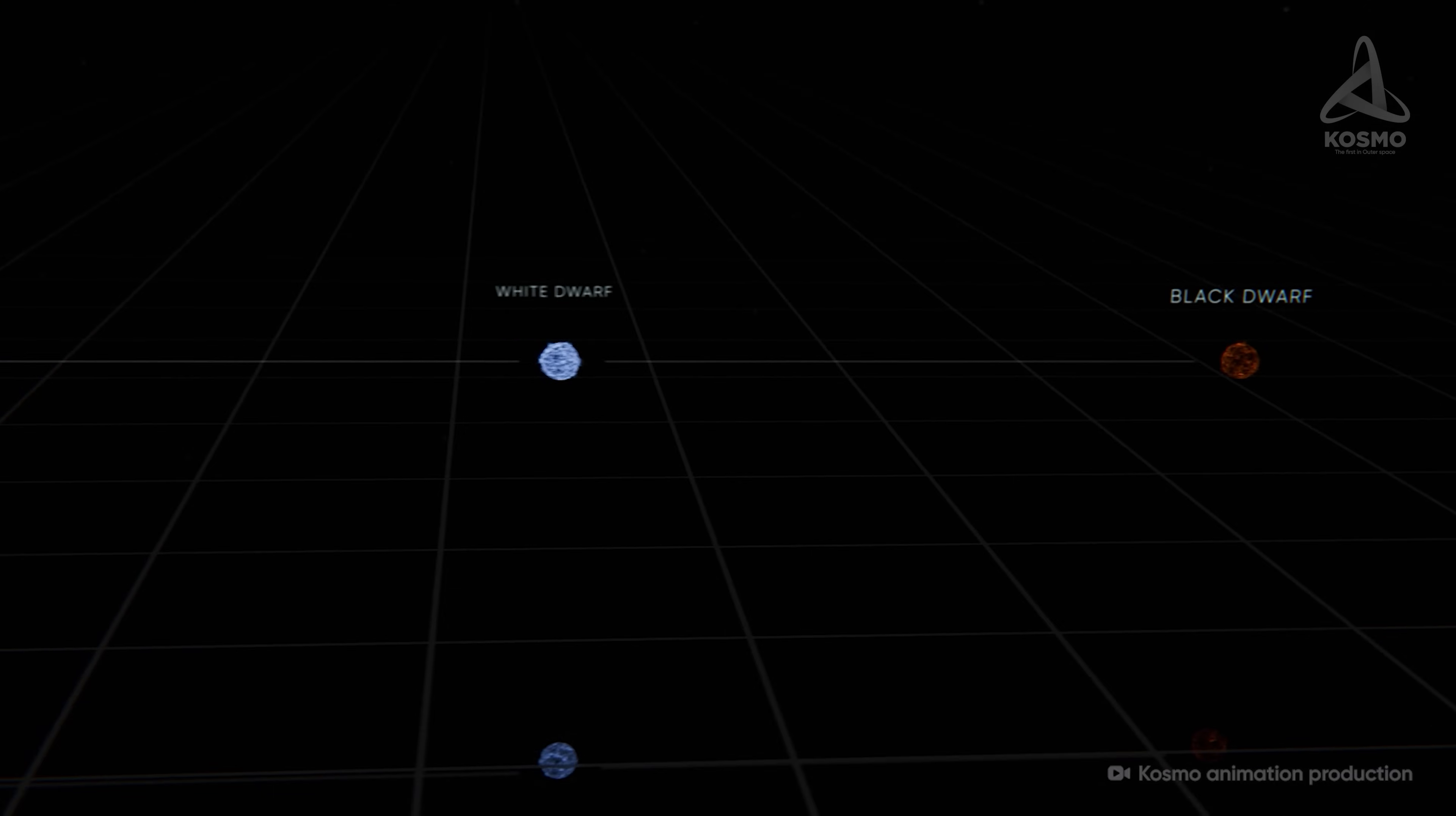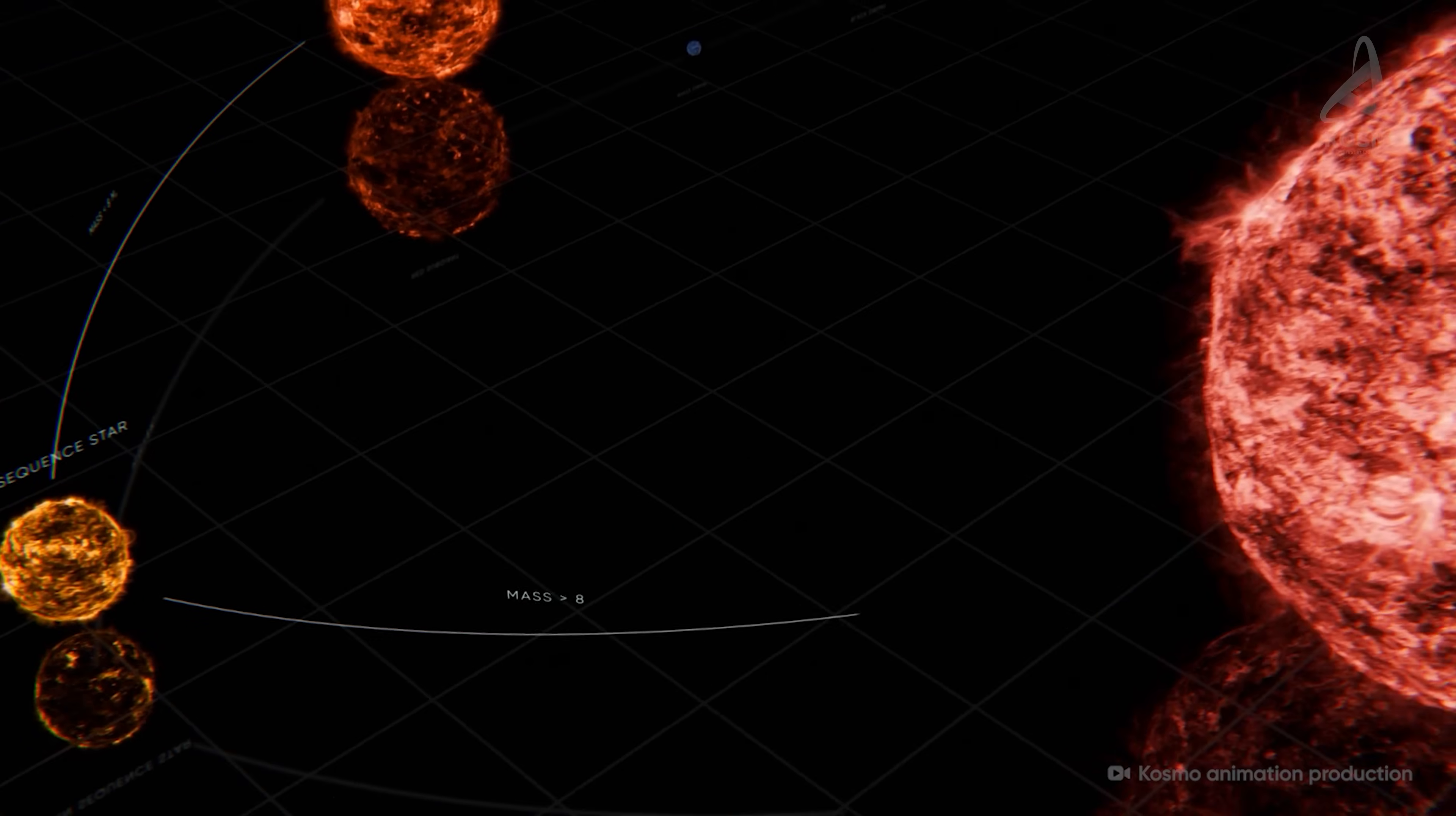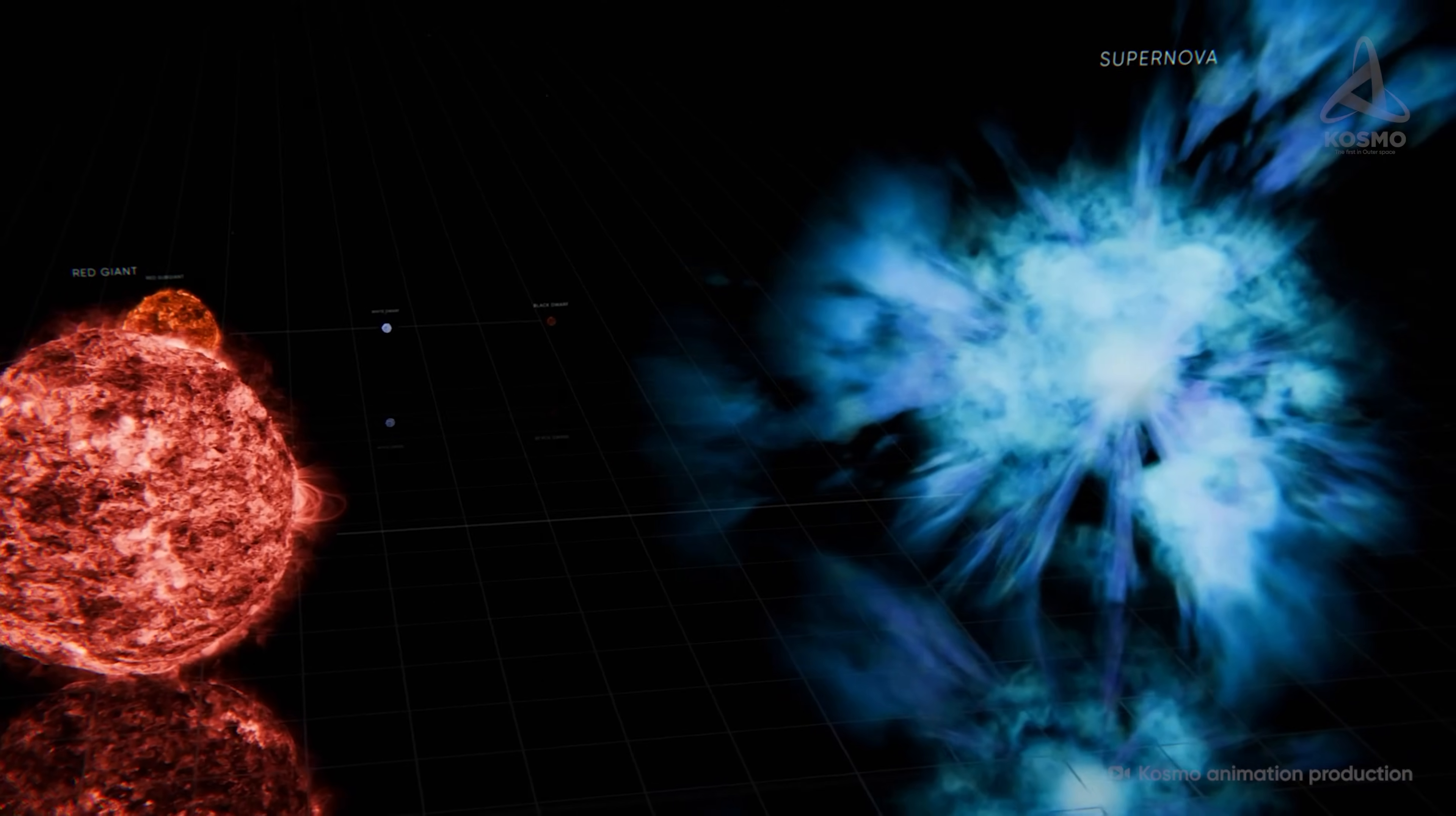This path is destined for more than 99% of the universe's stars, including our sun. If the mass of a star exceeds eight solar masses, however, its evolution follows a different path, eventually resulting in a supernova explosion.